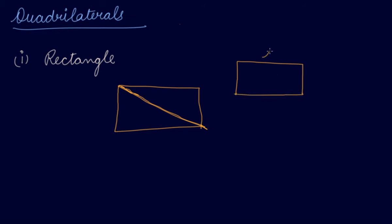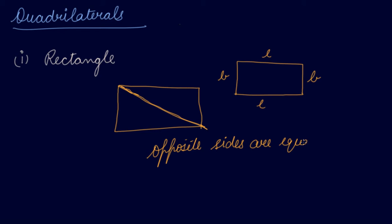Length is equal to length — two sides are equal. Breadth is equal to breadth. Which means opposite sides are equal. If the length is 5 cm, the other length will also be 5 cm. If the breadth is 2 cm, the other breadth will also be 2 cm. The opposite lines are parallel to each other.